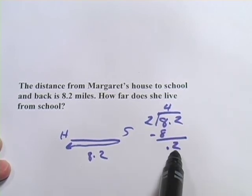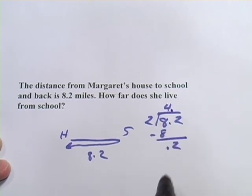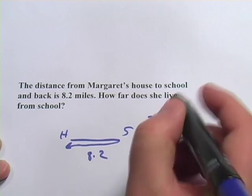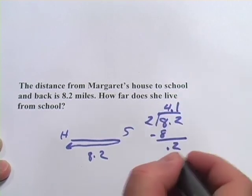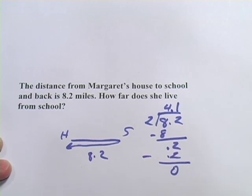Now how many 2's can fit in 2? Well, actually, let me put the decimal point because that's the next thing there. How many 2's can fit into 2? Well, that would be 1. 1 times 2 is 2. We subtract, we have 0 and that is how to do division of decimals by whole numbers.